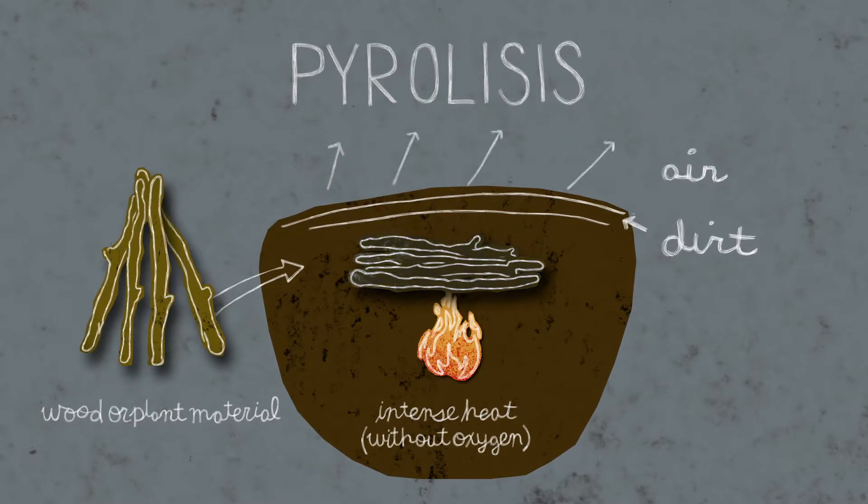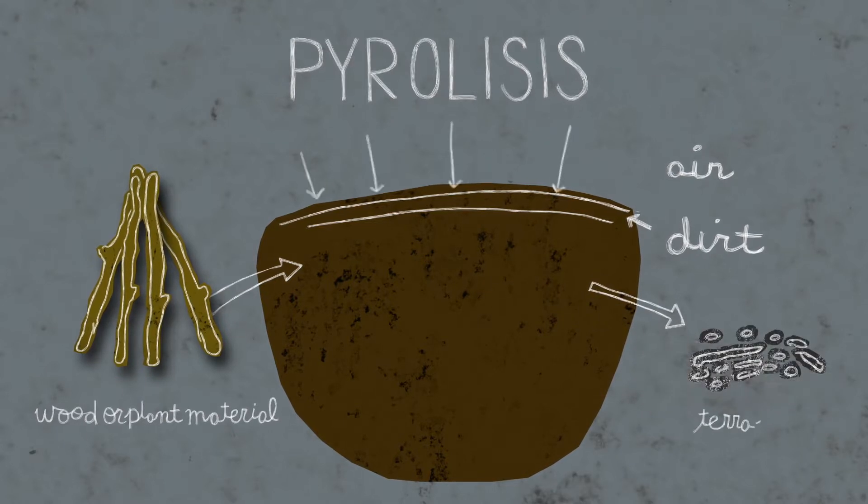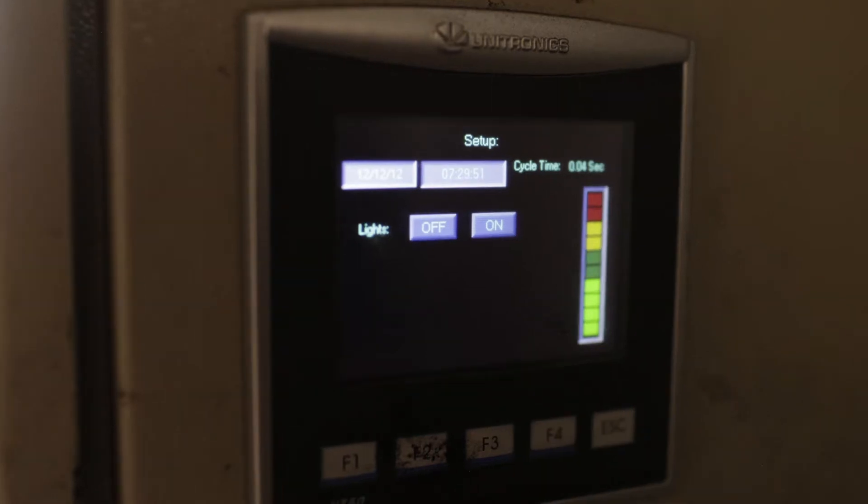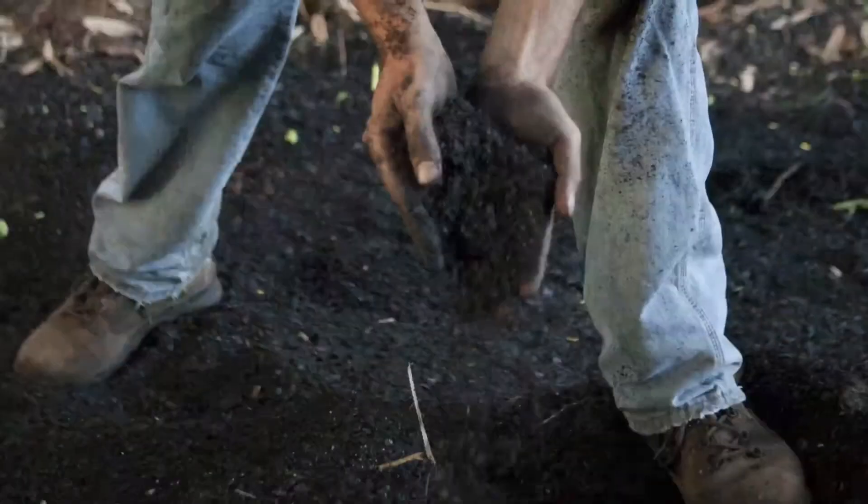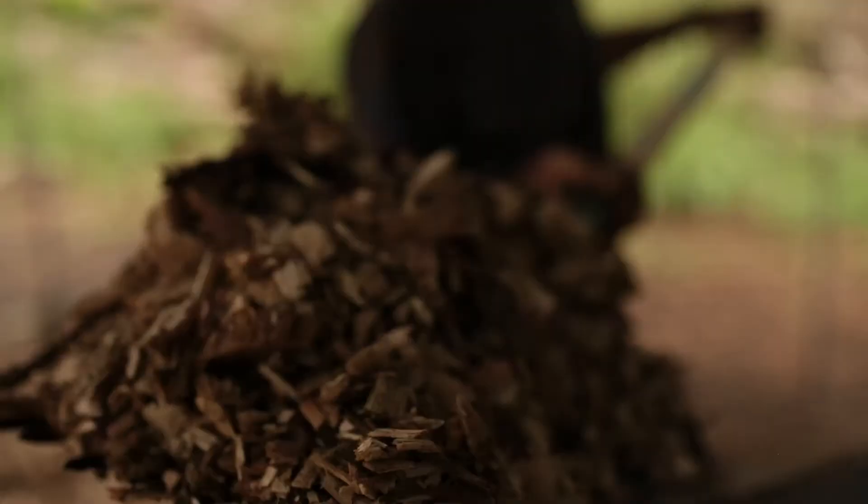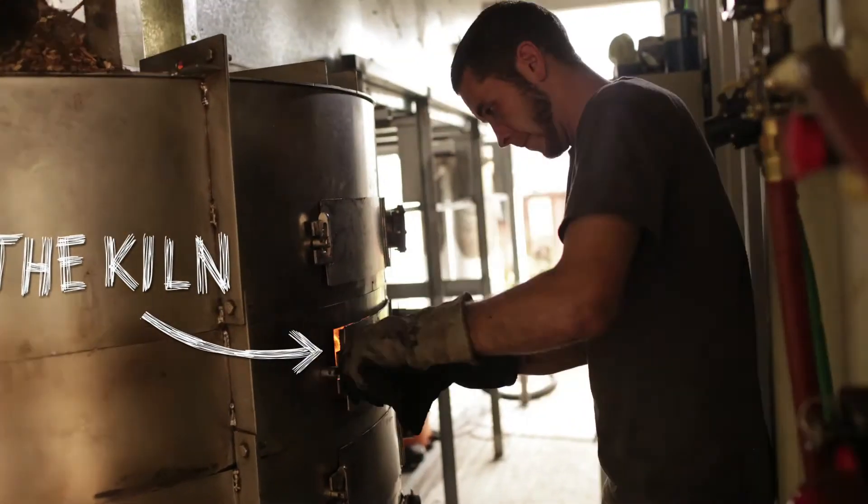Today, companies use technology to create a modern form of terra preta. It's called biochar. How does it work? Wood or feedstock is fed into a rotary kiln that operates at temperatures roughly 500 degrees Celsius.